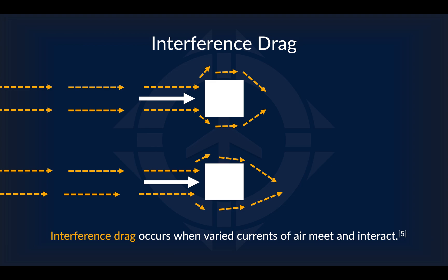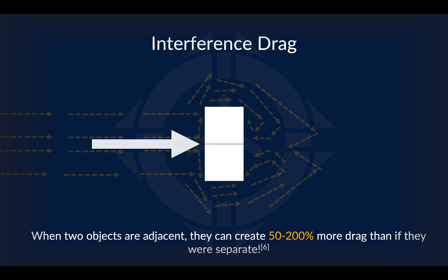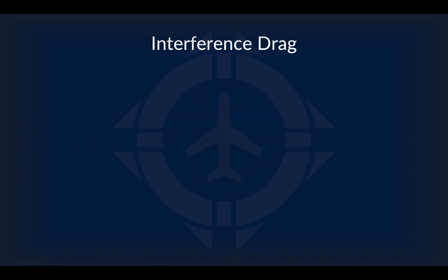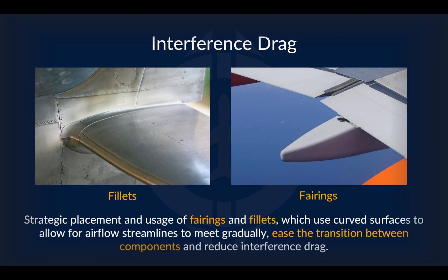The third and final type of parasite drag is interference drag, which is the drag that occurs when different currents of air meet and interact — essentially what happens when airflow disruptions from different objects come together. When two objects disrupting airflow are adjacent, they can create 50% to 200% more drag than if they were separate. Interference drag occurs between several components of an aircraft, especially at places where they are connected. To reduce interference drag, strategic placement and usage of fillets and fairings can be used — structures with curved surfaces designed to allow airflow streamlines to meet gradually, easing the transition between different air currents and thus reducing drag.